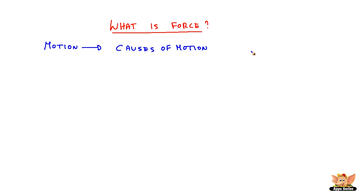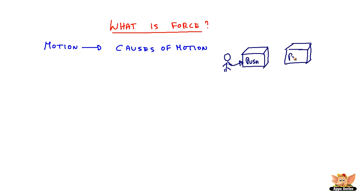In everyday life there are certain objects which we use and we change their motion. For example, there is a box and a person is trying to push it, or the same box, a person is trying to pull it. So by pushing and by pulling, the person is trying to move the object — it can be in a different direction or in the same direction. The effect of this is a motion of the object.